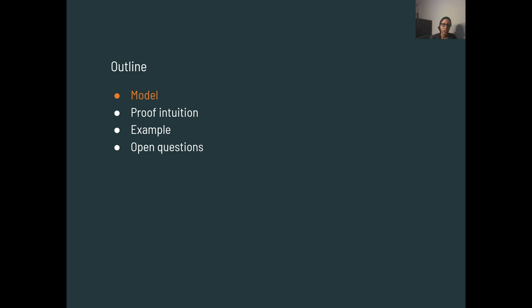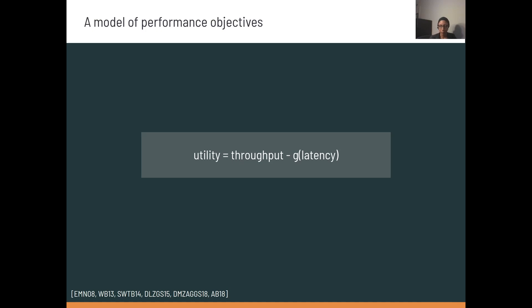I'll start with our network and utility model. For this talk, we'll look at a simplified model of what we mean by performance goals. Each sender's utility is just its attained throughput minus some function of the per-packet latency. In particular, this function will have to be convex and monotone increasing, which is a technical condition for our analysis. And similar utility functions have been used by a number of recent papers that also take a utility-based approach to congestion control.